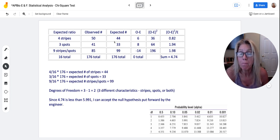Observed minus expected is 6. I square that, 36 over what I expected, 44. So that gives me 0.82 for stripes.